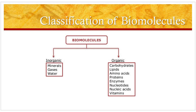The trace elements form 2% of the weight of protoplasm and these minerals include calcium, magnesium, sodium, potassium, chlorine, iodine and iron. The ultra trace elements include 0.001% of the weight of protoplasm and they include manganese, cobalt, copper, etc.